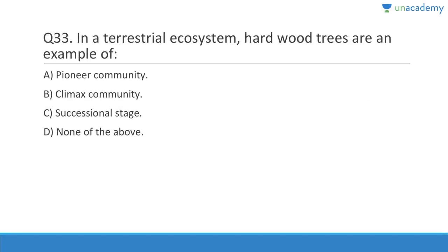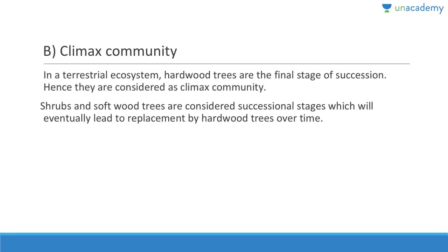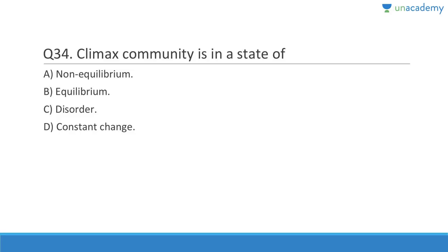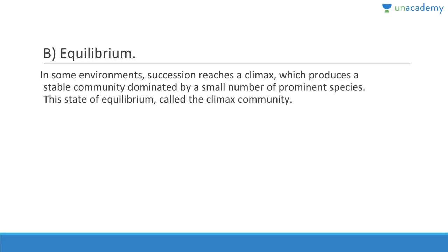Hardwood trees are the final stage of succession — called the climax community. Shrubs and softwood trees are considered successional stages that will eventually be replaced by hardwood trees over time. Question thirty-four: Climax community is in a state of equilibrium with the environment. Succession reaches a climax where species live in harmony, producing a stable community dominated by a small number of prominent species. This state of equilibrium is called the climax community.